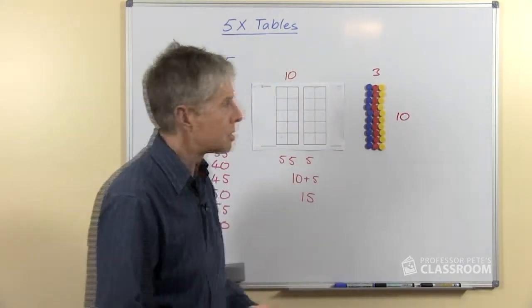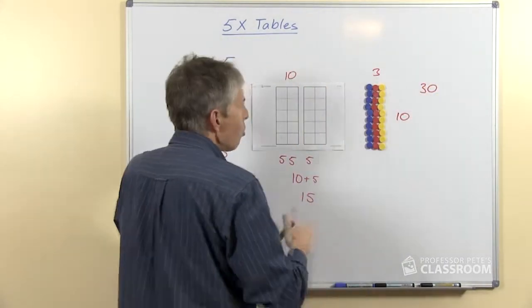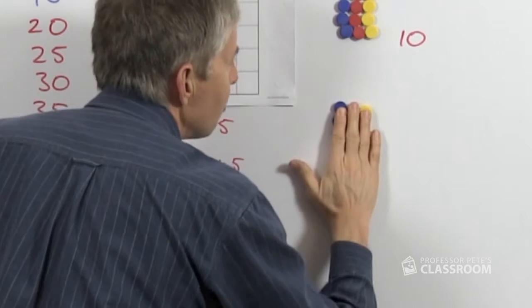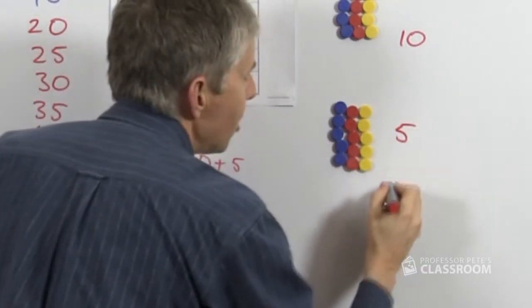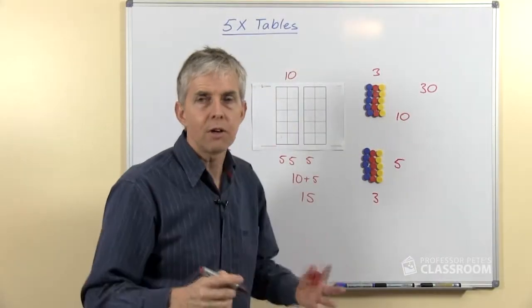Here we have columns of 10 and of course there are 3 columns. How many are 3 10's? Of course 3 10's make 30. What if I removed half of them down here? Now we have 5 in a column and there are still 3 columns.